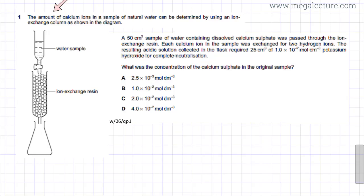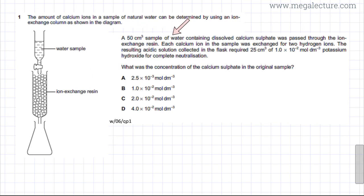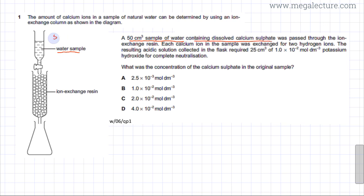The question states that the amount of calcium ions in a sample of natural water can be determined by using an ion exchange chamber as shown in the diagram. A 50 cm³ sample of water containing dissolved calcium sulphate (CaSO₄) was passed through the ion exchange resin.